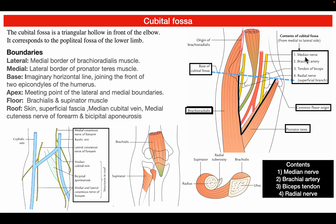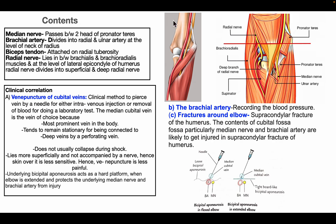The contents from the medial to lateral side can be remembered as MBBR: median nerve, brachial artery, tendon of biceps, and superficial branch of the radial nerve. So we already know about the contents of the cubital fossa.